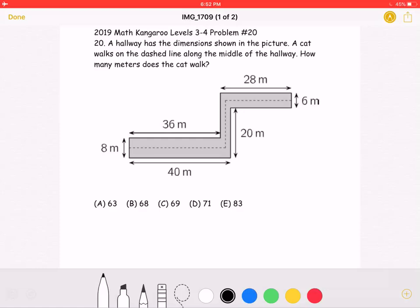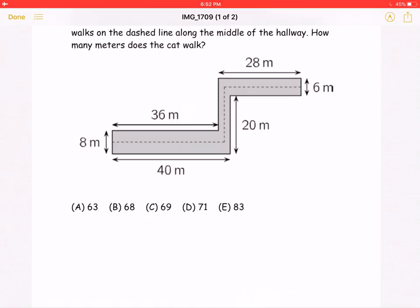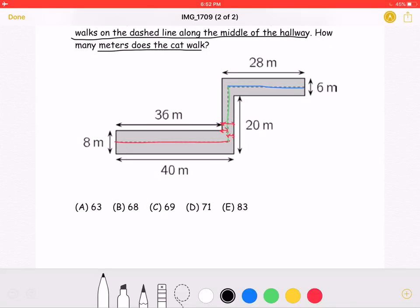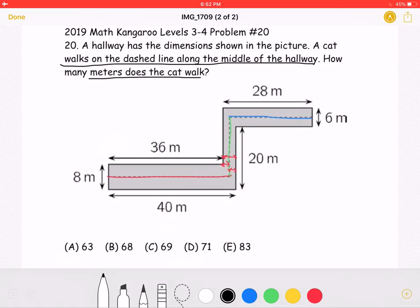This is the problem as it originally appeared on the test. Here is where we will be doing the solution. As I have underlined in black, the important parts of the problem are that the cat walks in the middle of the hallway, and that the question asks for the number of meters the cat walks.